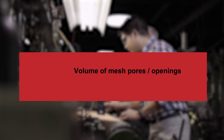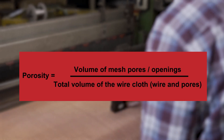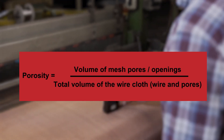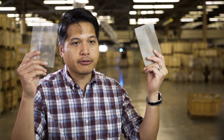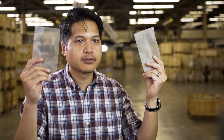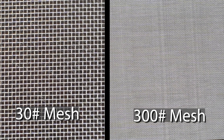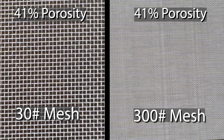Wire mesh porosity is defined as the volume of the mesh openings in relation to the total volume of the wire mesh, expressed as a percentage. You can achieve the same porosity with many different parameters. Here we have two samples that have the same porosity but vastly different mesh characteristics — these plain square weaves have approximately 41% porosity.